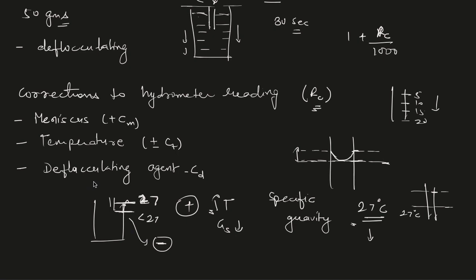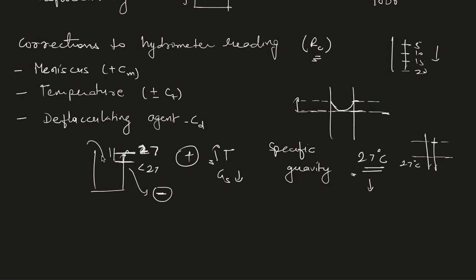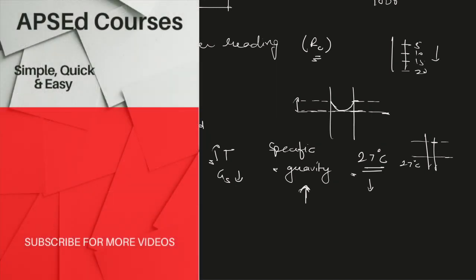The deflocculating agent added to the suspension increases its specific gravity above that of water alone. Because the specific gravity is higher, the hydrometer will not submerge as much as it would in pure water, giving a higher reading than it should. Therefore, the deflocculating agent correction must be deducted — it is always a negative correction. These are the three corrections for the hydrometer.